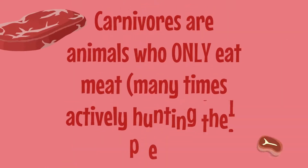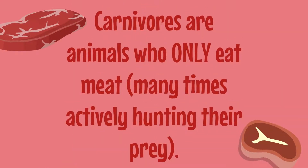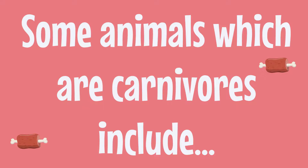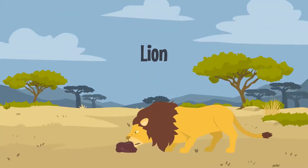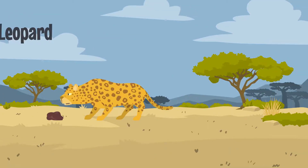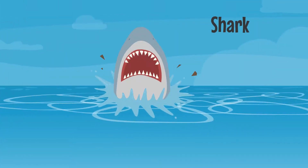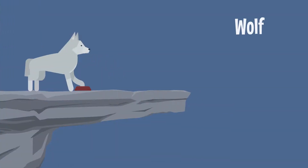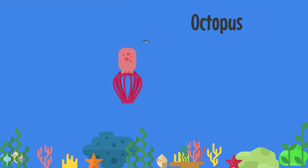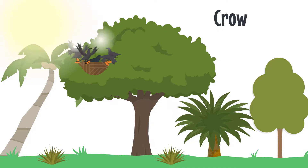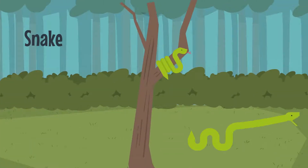Carnivores are animals who only eat meat, and sometimes this includes hunting their prey. Some animals which are carnivores include lions, tigers, leopards, sharks, penguins, wolves, the octopus, crocodiles, crows, snakes, and owls.